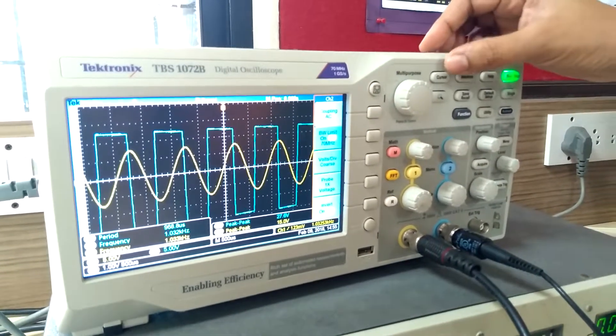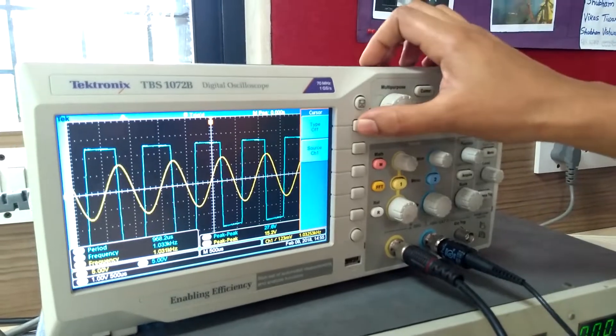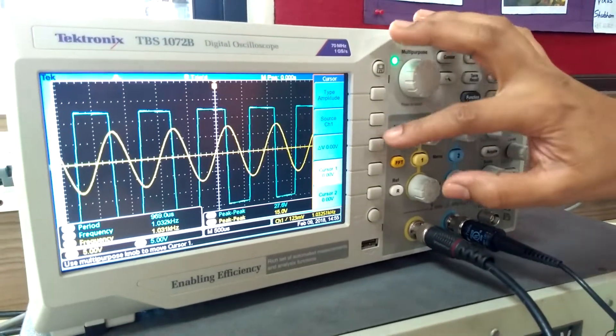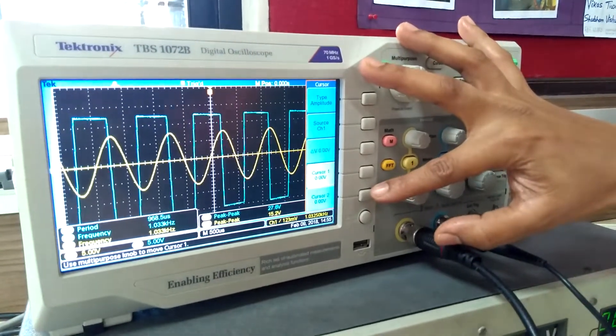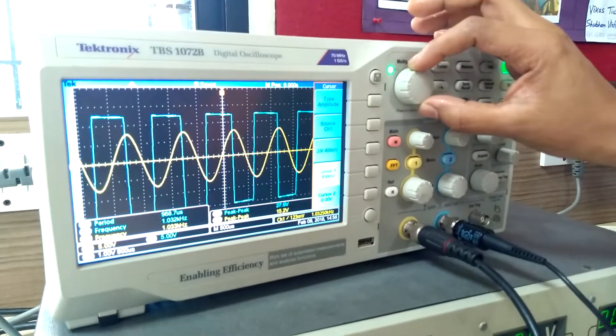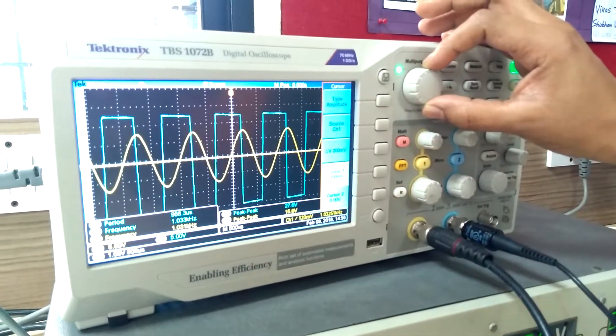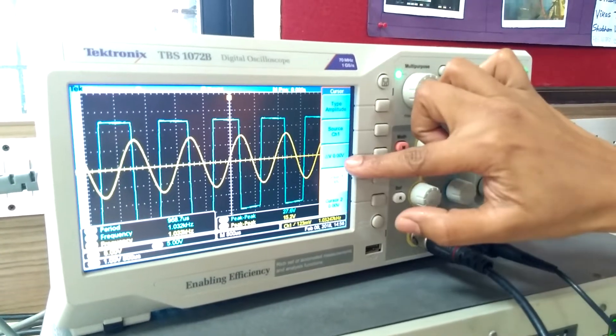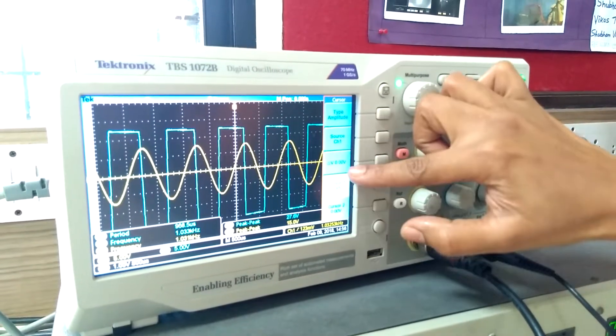For the measurement, press cursor. Select type, amplitude. Then you can see there are two cursors. Cursor 1 and cursor 2. Now we will select one of the cursor. If you see the position of cursor, it is on the same line 0. Therefore, the difference between these two cursors is 0.